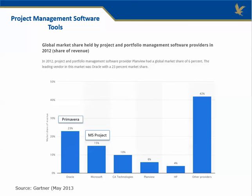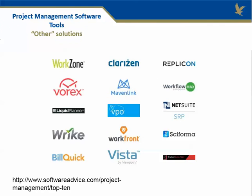Let's take a quick look at who some of these other providers are in that 42%. According to softwareadvice.com, you see some you may not have heard of before — from WorkZone to Wrike, LiquidPlanner, BuildQuick, WorkFlow, Replicon, Clarison. I have not used some of these packages. I've actually used one that's not on there — a web-based tool called Basecamp — which helps you manage aspects of a project, but it may not have all the tools that something like Primavera, MS Project, or PlanView may have.